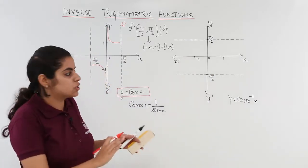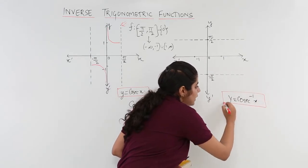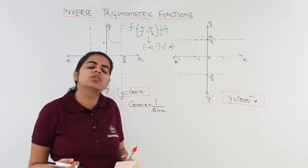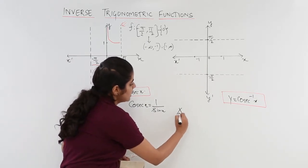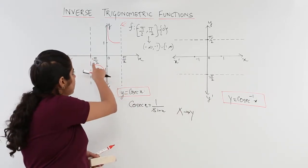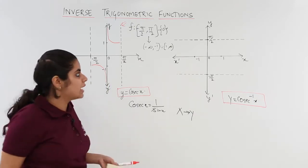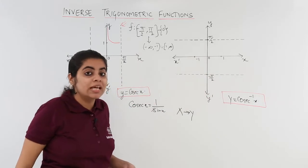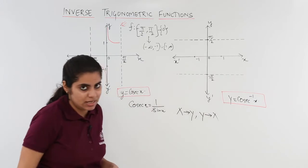Now my task is to draw y is equal to cosecant inverse x. To do this, we follow 3 simple steps. Step one: interchange the x-axis with the y-axis. Where was the x-axis? It was from minus pi by 2 to pi by 2. Now that becomes the y-axis: minus pi by 2, 0, pi by 2.